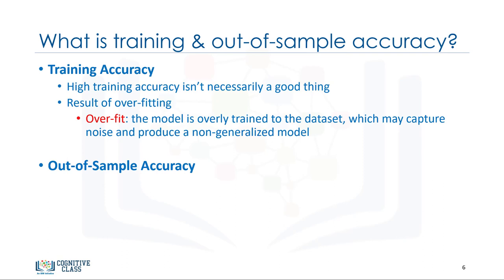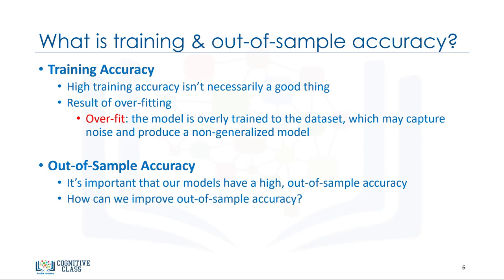Out-of-sample accuracy is the percentage of correct predictions that the model makes on data that the model has not been trained on. Doing a train and test on the same data set will most likely have low out-of-sample accuracy due to the likelihood of being overfit. It's important that our models have high out-of-sample accuracy because the purpose of our model is, of course, to make correct predictions on unknown data. So, how can we improve out-of-sample accuracy?